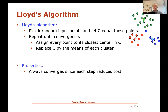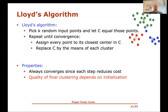What can we say about Lloyd's algorithm? It always converges. Every time we make a change, we reduce the cost — we always choose the placement of centers that's optimal given the partitioning, or the assignment that's optimal given the centers. So we always reduce the cost with every step, and it can never keep reducing indefinitely.